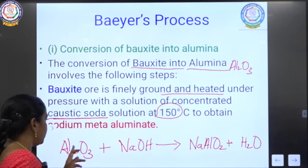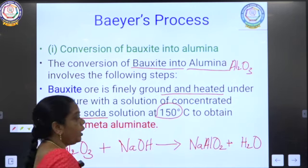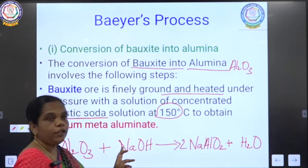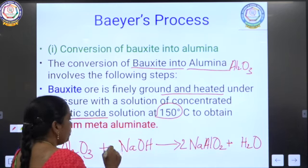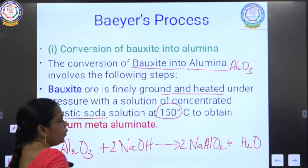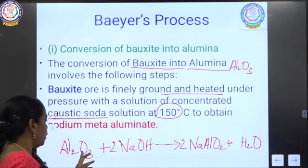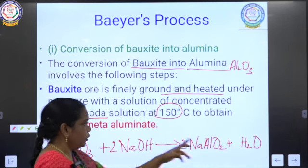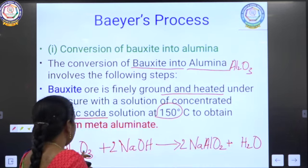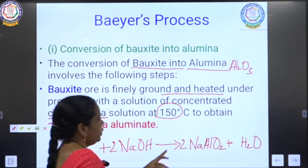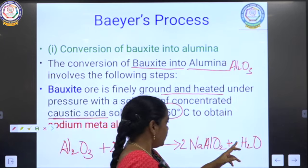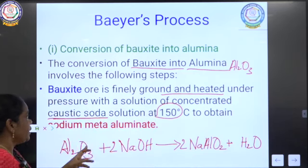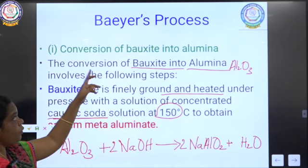To balance the equation: on the left side there are 2 aluminium atoms but only 1 on the right, so we put 2 in front of NaAlO₂. Checking sodium: 2 on each side. Checking oxygen: 3 + 2 = 5 on the left, and 2×2 + 1 = 5 on the right. The reaction is balanced. This is the reaction taking place in the conversion of bauxite ore — bauxite treated with caustic soda under pressure at 150°C gives sodium metaaluminate.